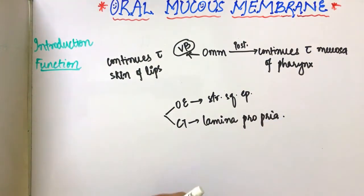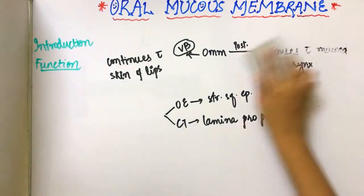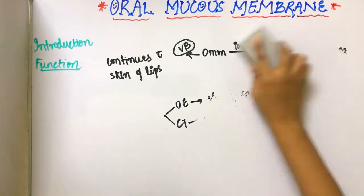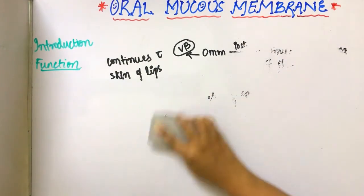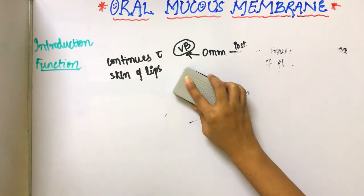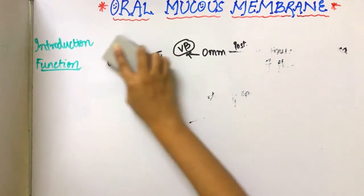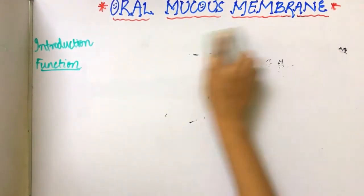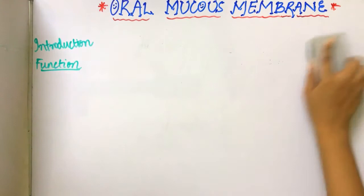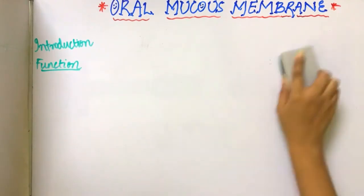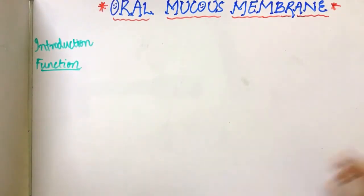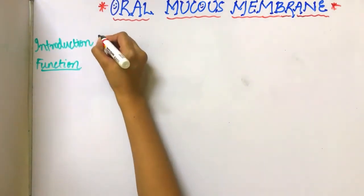Now, coming to the functions of the oral mucous membrane. The oral mucous membrane performs four functions: defense, lubrication, sensory, and protection.